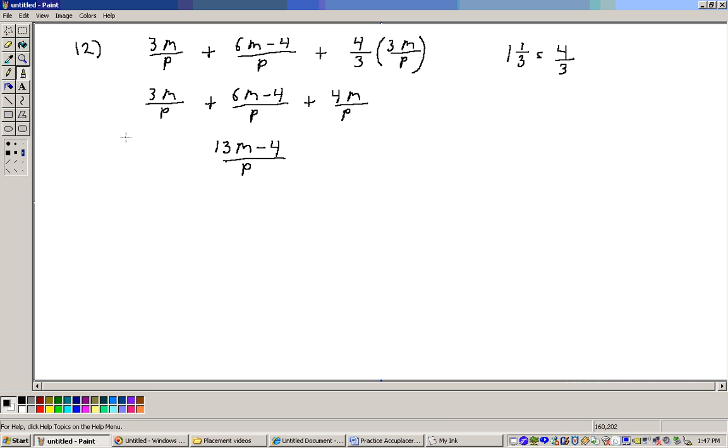So we need to add these together, 3M over P plus 6M minus 4 over P plus 1 and a third. Well, 1 and a third is the same as 4 thirds. So we need to take 4 thirds times the amount that Tara made, which is 3M over P. So this is 3M over P plus 6M minus 4 over P plus, here the threes will cancel out, and I just get 4M over P. Now, combining the like terms, 3M plus 6M is 9M plus 4 more makes 13M, and the only constant up on the top is minus 4, so 13M minus 4 over P.